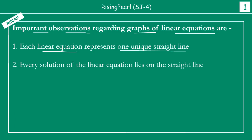The next point, friends, is that every solution of a linear equation — and we know there are infinite solutions — lies on the straight line. So when you draw the graph of a linear equation, you get a straight line, and every solution of that equation lies on that straight line.